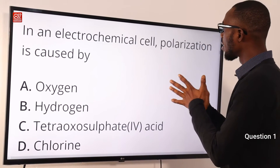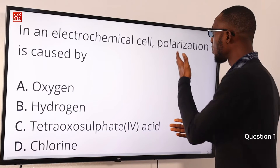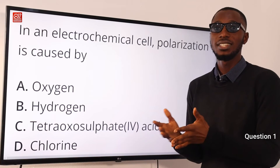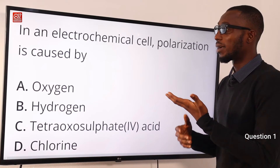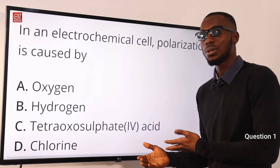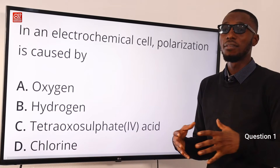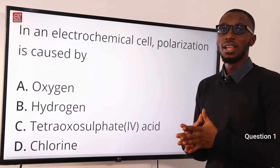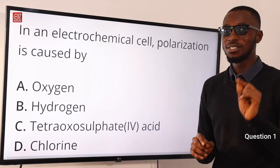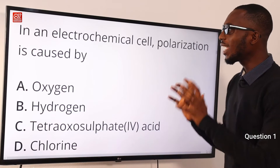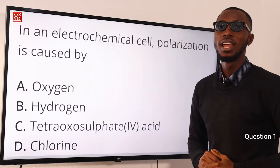In an electrochemical cell, polarization is caused by what? Polarization is just changing the voltage between the anode and the cathode so that you can reduce the rate of corrosion. You can have activation polarization, concentration polarization, resistance polarization. An important example of polarization is that of a hydrogen ion at the cathode. So the correct option here is option B, hydrogen. In an electrochemical cell, polarization is caused by hydrogen, option B.